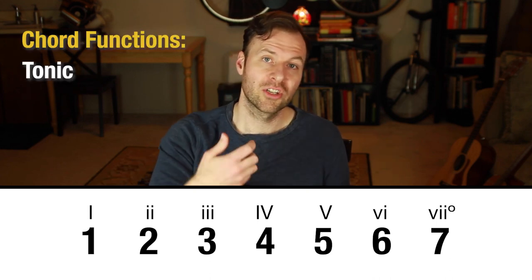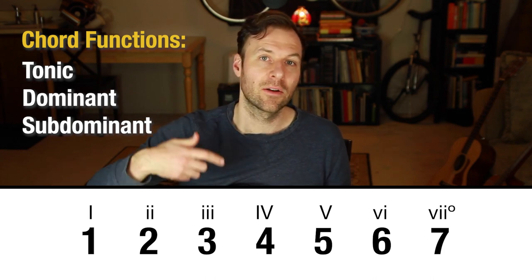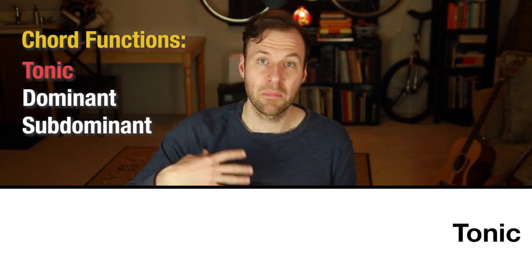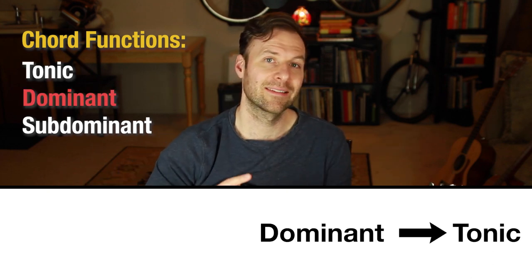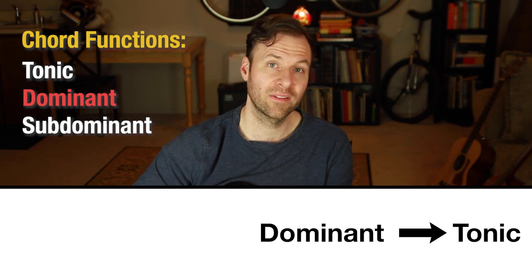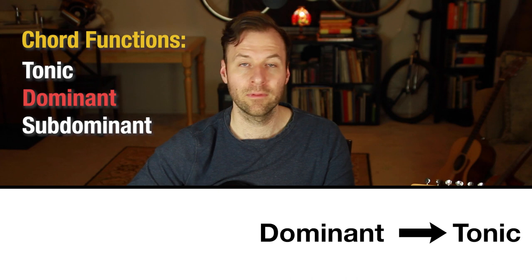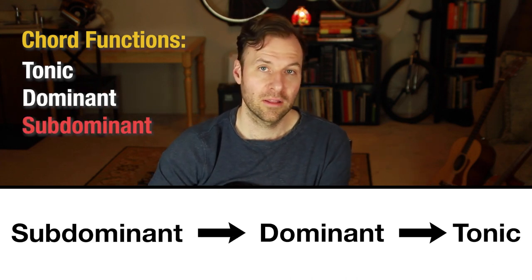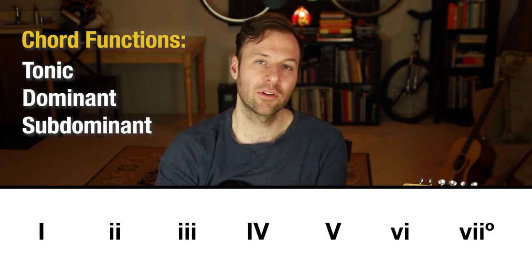In traditional functional harmony there are three different types of functions that any of those seven chords will be used as. The three main functions are tonic, dominant, and subdominant — I've also heard subdominant called predominant, and you'll see why. The tonic functions as the home base or the main arrival point, a stable area. The dominant functions as something unstable that points to the tonic, creating tension or momentum that wants to resolve. The subdominant simply comes before the dominant, which is why it can also be called predominant.